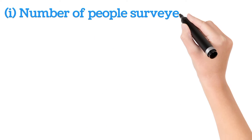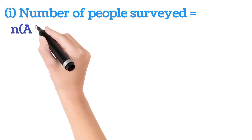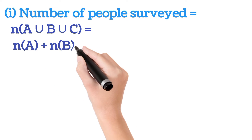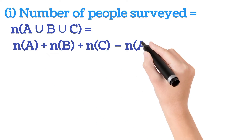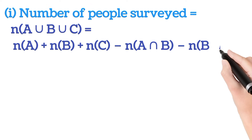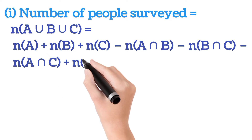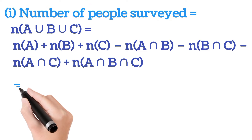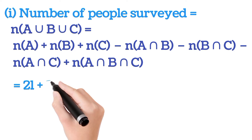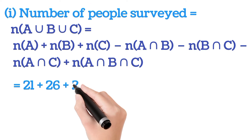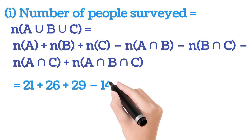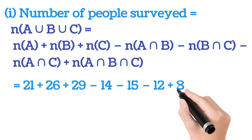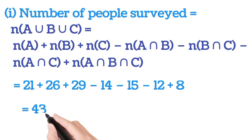The first question is to find the number of people surveyed. Using the union formula: N(A ∪ B ∪ C) = N(A) + N(B) + N(C) − N(A ∩ B) − N(B ∩ C) − N(A ∩ C) + N(A ∩ B ∩ C). Substituting the values: 21 + 26 + 29 − 14 − 15 − 12 + 8 = 43. So the total number of people surveyed were 43.